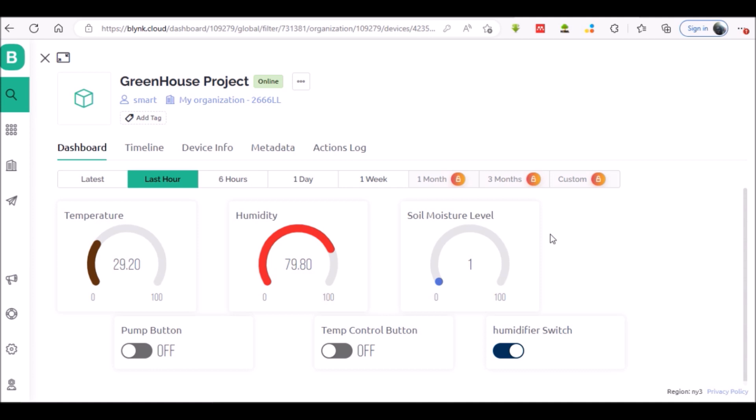These parameters can be remotely monitored on the IoT dashboard of the Blynk app. Here we can monitor what the temperature is, the humidity of the plant's greenhouse, and the soil moisture level.